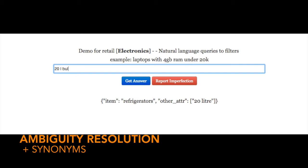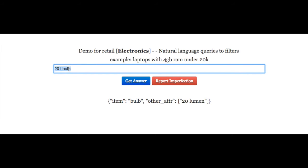However if I type in 20l bulb, in this case l is ambiguous, but it correctly deduced it to be lumen because it's a bulb whereas in the previous case it interpreted l as liters. So it can resolve some ambiguities also.